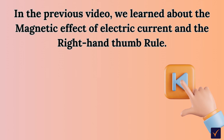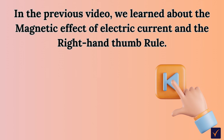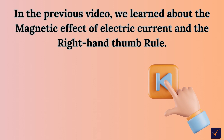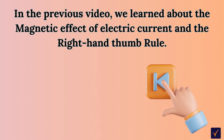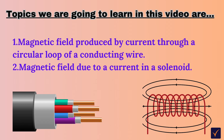In the previous video, we learnt about the magnetic effect of electric current and the right-hand thumb rule. In this part of the video, let us learn about the magnetic field produced by current through a circular loop of a conducting wire. Then we will see the magnetic field due to a current in a solenoid. Let's get started.